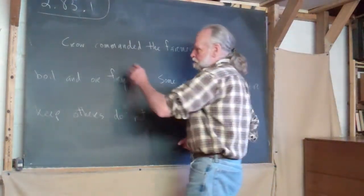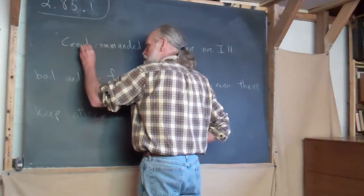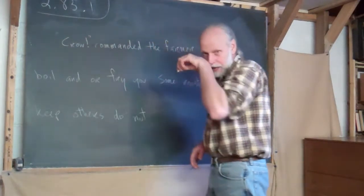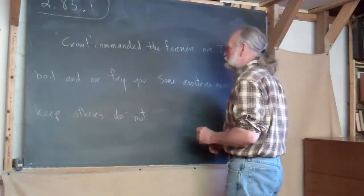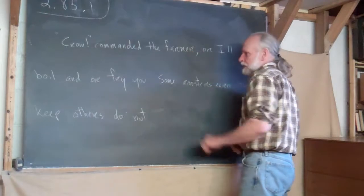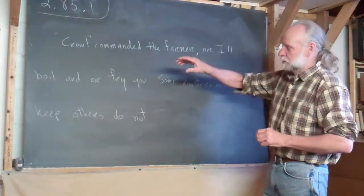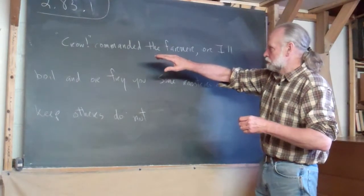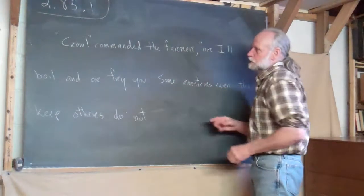Crow is a command and the farmer says it. So it's his words, open quotes, Crow. And since it's a command, it really calls for an exclamation point. Here's the dialogue tag, commanded the farmer. That calls for a comma because now the sentence goes on. The farmer says, Crow or I'll boil. But I have to reopen quotation marks.